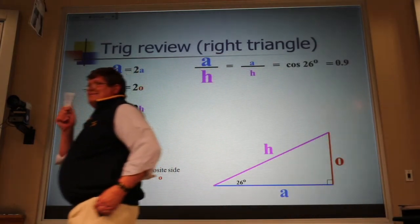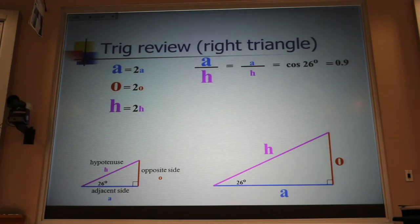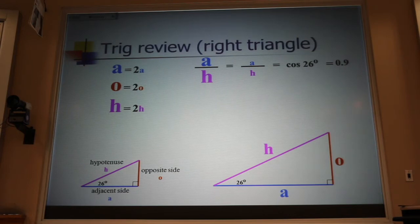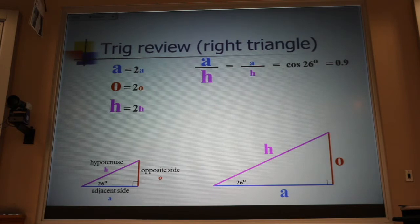Now, humor me. Humor the old guy. Take out your calculator right now and punch in cosine of 26 degrees and see if you get something close to 0.9. Some of you are going to get something very, very different than 0.9. That means that your calculator is set on radians instead of degrees.